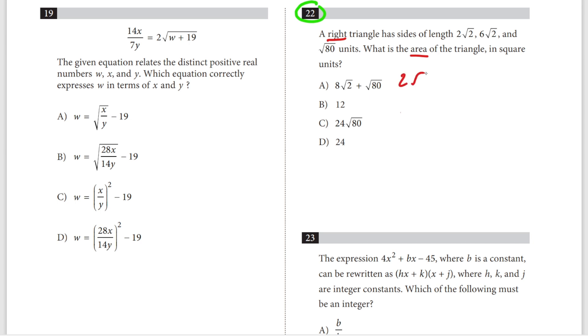We have 2√2 as one leg, 6√2 as another potential leg, and √80 as potentially the third leg or hypotenuse. We don't know. Let's assume 2√2 and 6√2 are the legs.